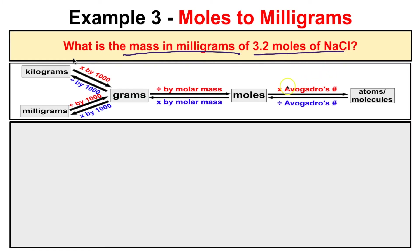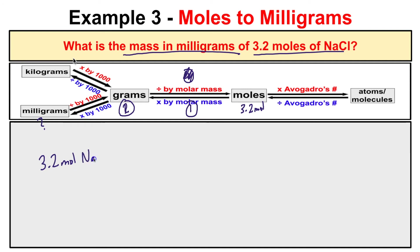We know that we have 3.2 moles of NaCl and we want to figure out its mass in milligrams. The first step will be to multiply by the molar mass to convert moles to grams, and then the second step is to multiply by a thousand to convert grams to milligrams. So in this problem we have 3.2 moles of NaCl and first we want to convert these moles to grams.